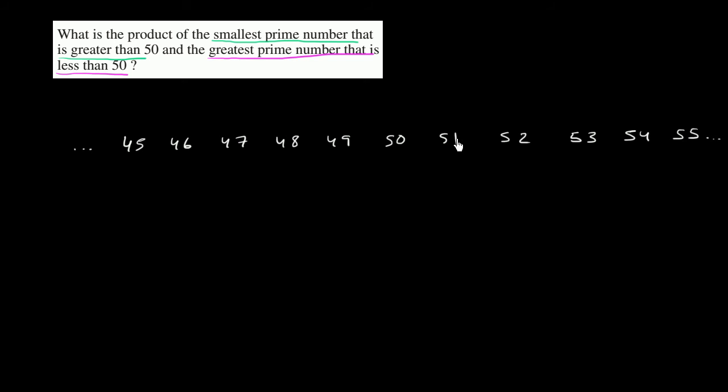And one way to test the divisibility by 3 is add these digits. 5 plus 1 is equal to 6. And we have other Khan Academy videos on why that actually works. But 6 is divisible by 3, so this is not a prime number. 52 is clearly even, so it's not a prime number. And so the smallest prime number above 50 is going to be 53. Try things out. 53, its only factors are 1 and itself. So this is the smallest prime number that is greater than 50.